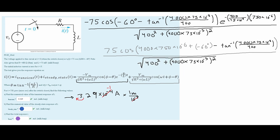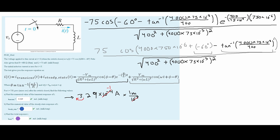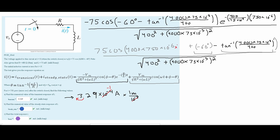However, there is a slight problem inside our cosine due to a difference in units. The negative 60 degrees and theta are in degrees, but the omega times t constants are in radians. So we need to convert omega times t from radians into degrees by multiplying by 180 degrees and dividing by pi, eliminating the radians and leaving only degrees.